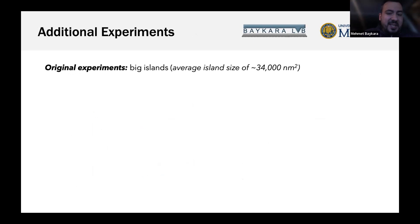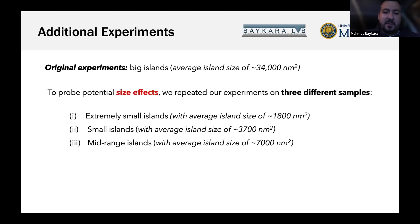These experiments were performed on big islands with average contact size of about 34,000 nanometers squared. To probe potential size effects, we repeated experiments on three smaller sample sets: extremely small, small, and medium range islands. We control size by changing gold deposition parameters. Interestingly, in all three smaller samples, we rarely observed any of these three effects.